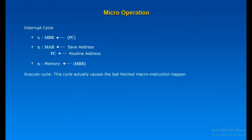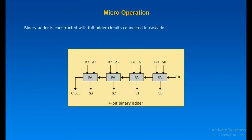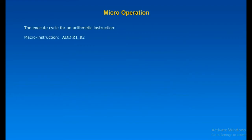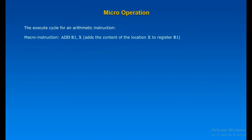The execute cycle actually causes the last fetched macro-instruction to happen. A binary adder realizes binary number addition; a 4-bit full adder is shown here. Consider the instruction ADD R1, R2, which adds the contents of R2 with R1 and stores the result in R1. This micro-operation requires one cycle, because it is a pure register reference instruction.